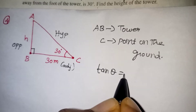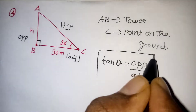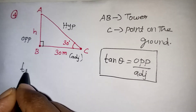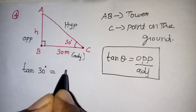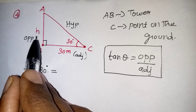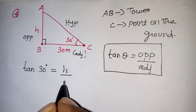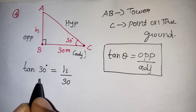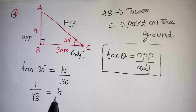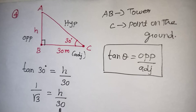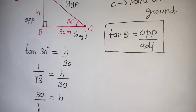We know that tan theta is equal to opposite side divided by adjacent side. We are going to apply tan with theta replaced by 30 degrees: tan 30° equals opposite over adjacent. The opposite value is H (also written as AB), and the adjacent side is 30. The value of tan 30° from the table is 1 by root 3, which equals H by 30. We want to find H, so taking 30 to the other side gives us H equals 30 by root 3.